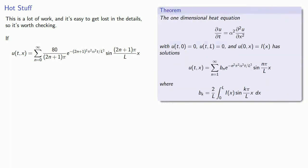Now this is a lot of work, and it's easy to get lost in the details, so it's worth checking. Remember our basic assumptions. The endpoints are going to be held at a constant temperature of 0. If x equals 0, then all of our sine terms are going to be 0, so u of t0 equals 0. At x equal to L, the other endpoint, we want the temperature to be 0. If x equals L, we're taking the sine of an odd multiple of pi, which is also going to be 0. So u of tL equals 0.